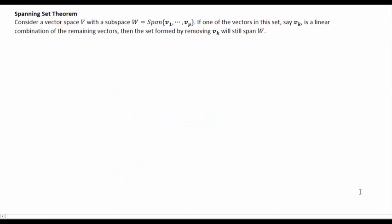So this last example was an example of the spanning set theorem. So the idea of this is if we have a vector space with a subspace given by the span of a set of vectors, and if we know one of the vectors in this set, we'll call it VK, is a linear combination of the remaining vectors, the set formed by removing VK will still span W.